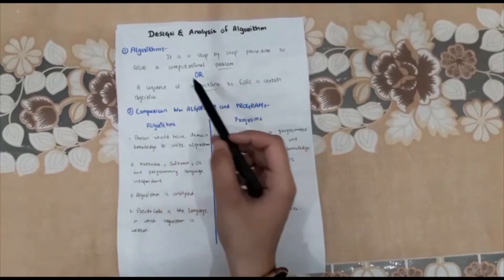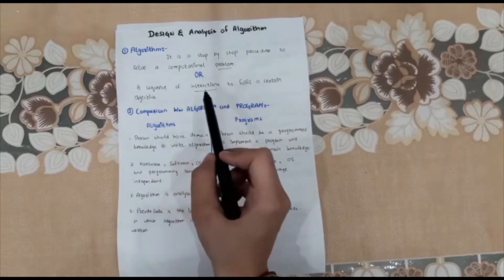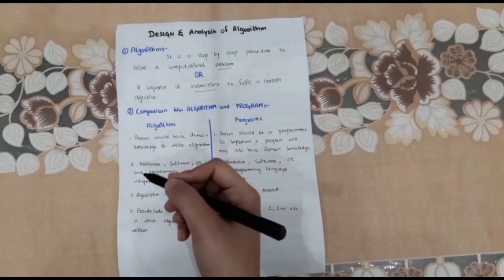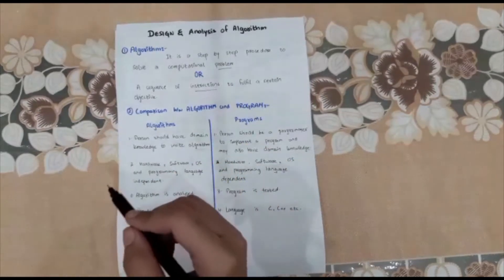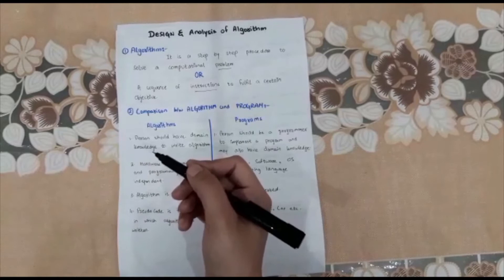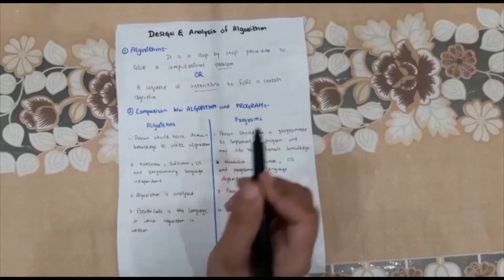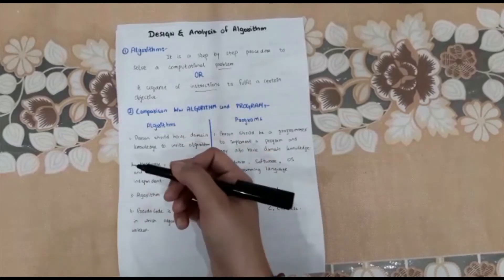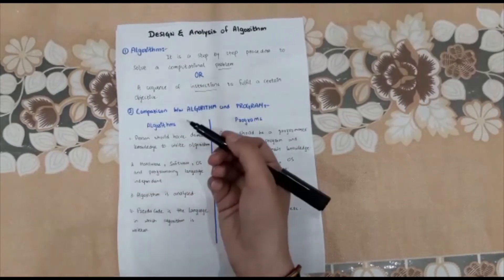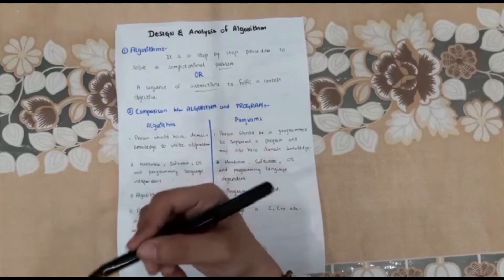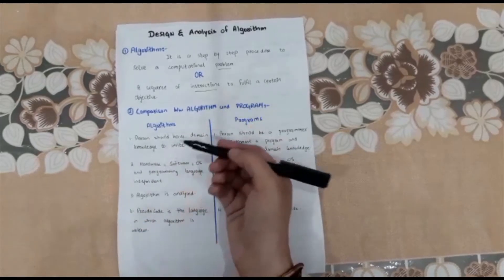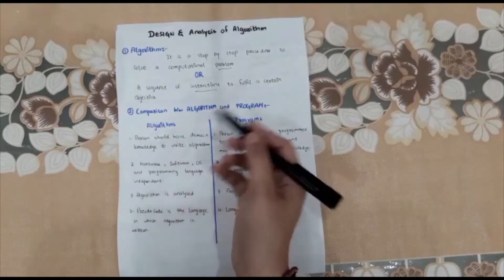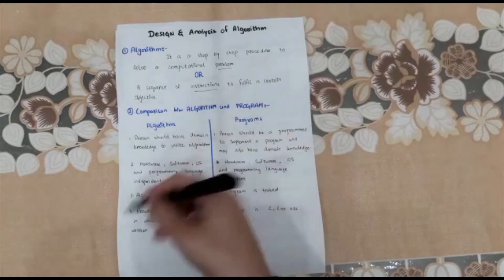A step-by-step procedure is a sequence of instructions. We can't display the output before the input — we can't process the input without taking some input initially. So we have a step-by-step procedure: a program or an algorithm will take input, then processing occurs, and after processing it will display its output. This is all step-by-step in a sequence.